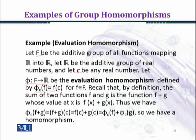Let phi from F to R be the evaluation homomorphism defined by phi of f equals f of c. We are taking the value of our function at c, for f belonging to F, the capital F set which contains all functions from R into R.